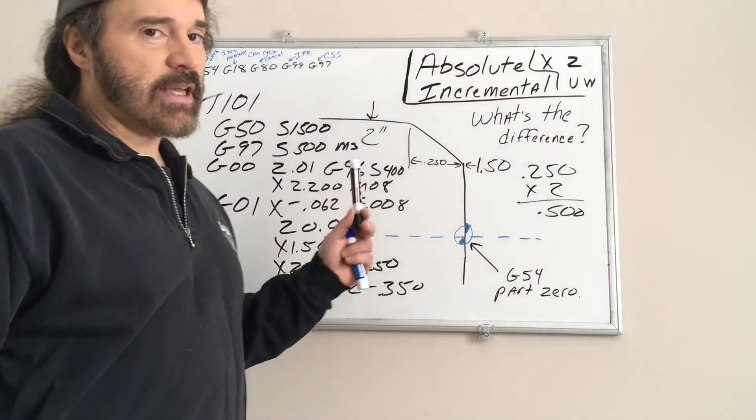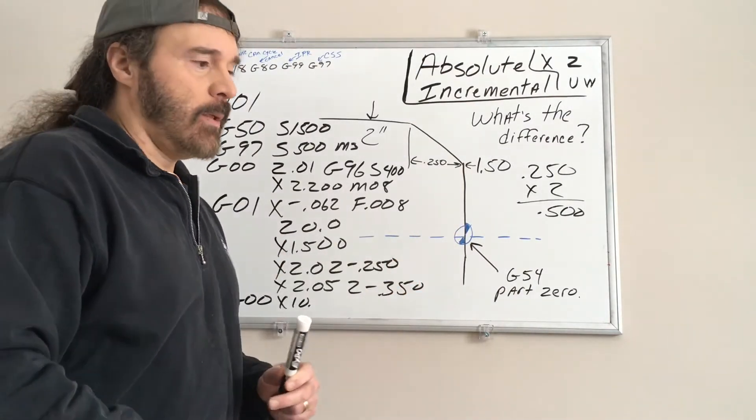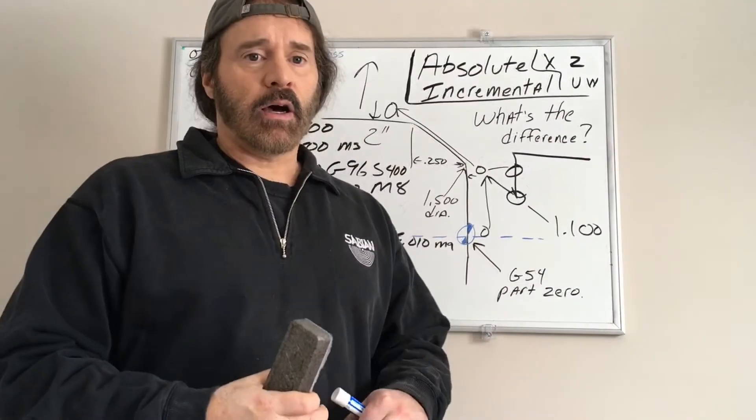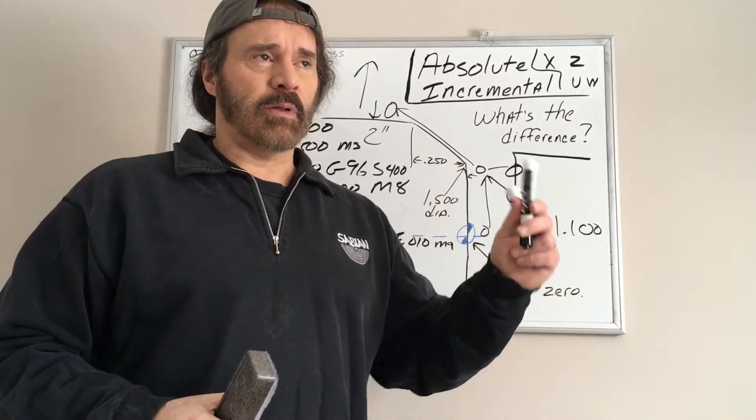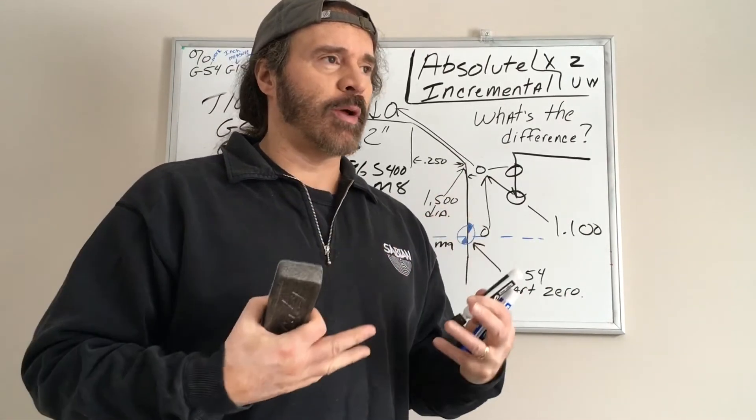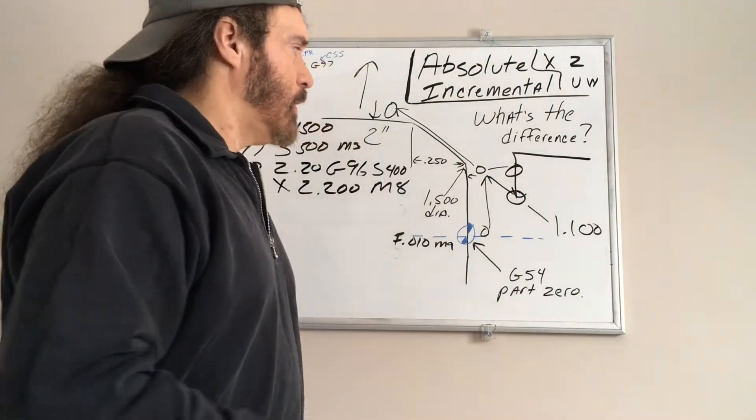From there on out, you just finish off your program. Have it rapid X whatever, like 10 inches up, then have it go back out of the way. That's kind of been explained in previous videos. We'll call that absolute programming. Now if we wanted to do an incremental, I deleted part of my other video because it wasn't explained as thorough as I would like to have done it.